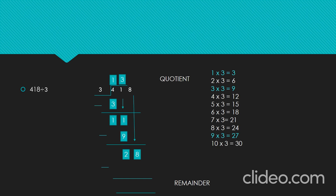28 divided by 3. By using the tables of 3, we get the product that is very near and less than 28, which is 27, by multiplying 9 with 3. So, let's write 9 in the ones place of the quotient and 27 below 28. Let's subtract 27 from 28 — that is, 28 minus 27 gives 1. Here, our quotient is 139 and remainder is 1.